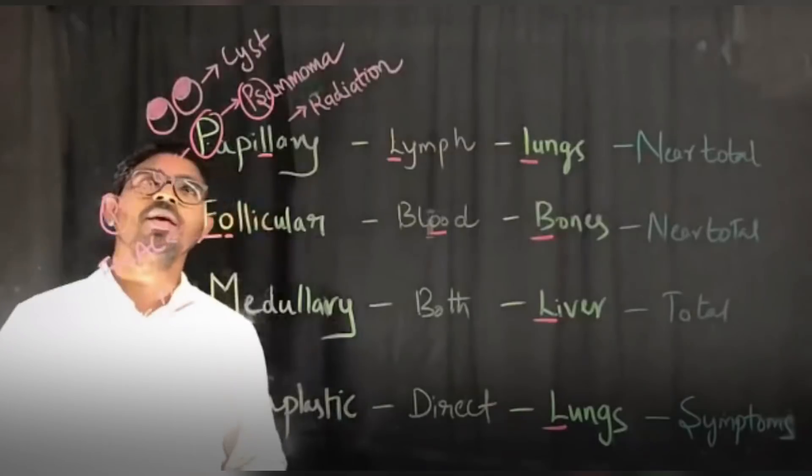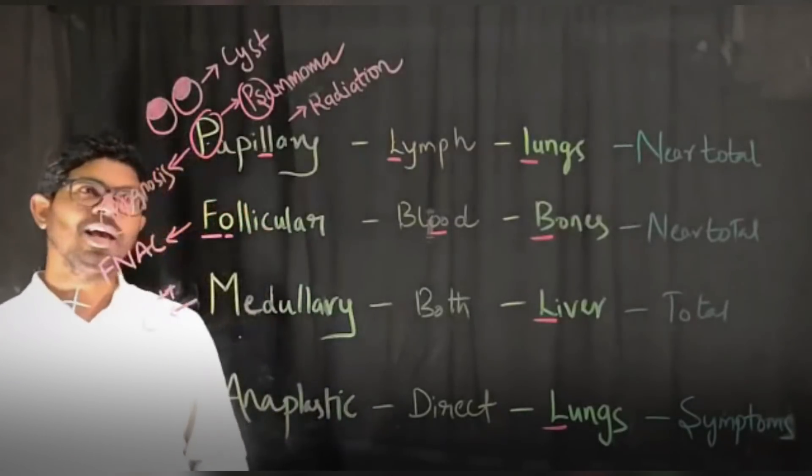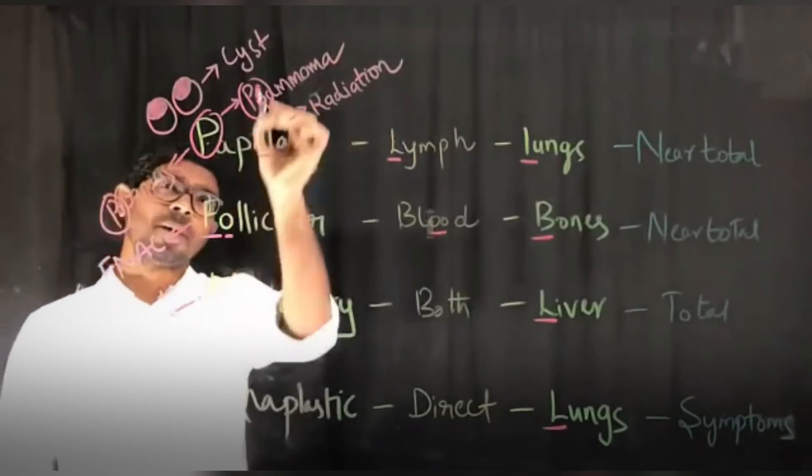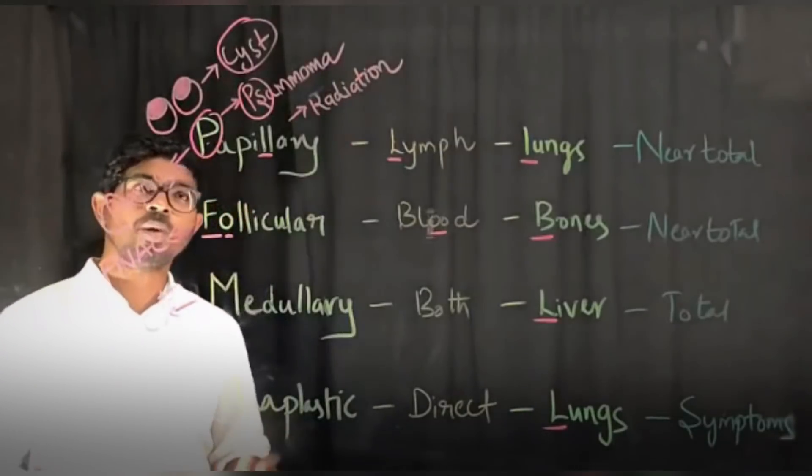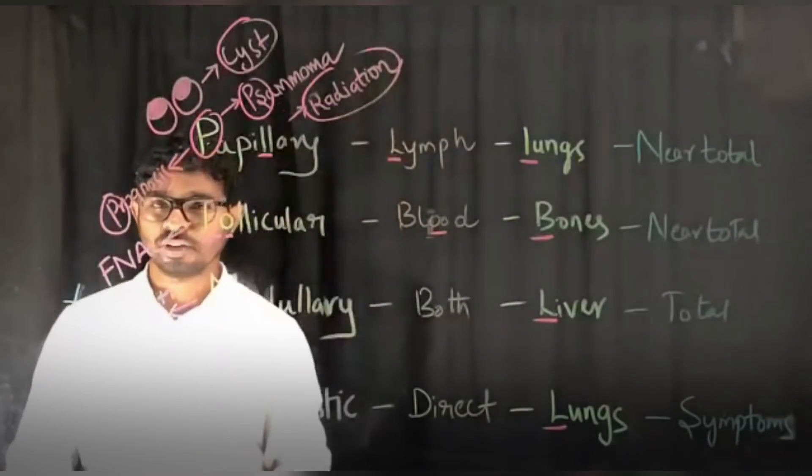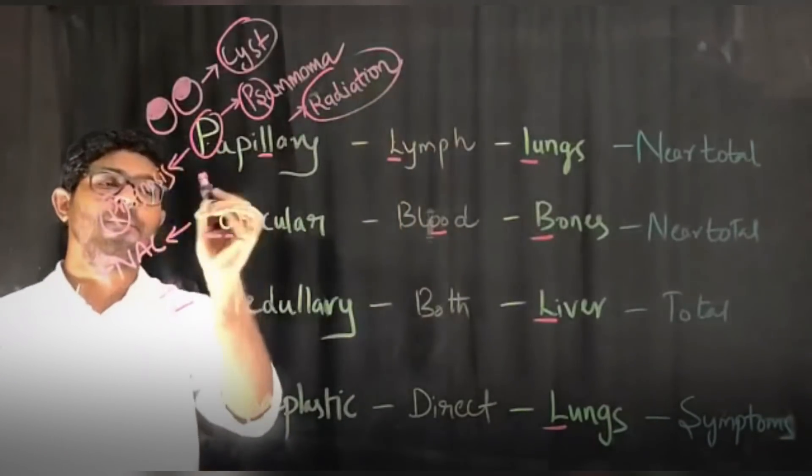And apart from this, you can see Orphan Annie nuclei. Orphan Annie nuclei are most commonly seen in papillary carcinoma of thyroid. You can also know about thyroglossal cyst - it most commonly leads to papillary carcinoma. If the patient is undergoing radiotherapy to the thyroid gland or neck, the most common carcinoma that can occur is papillary again.